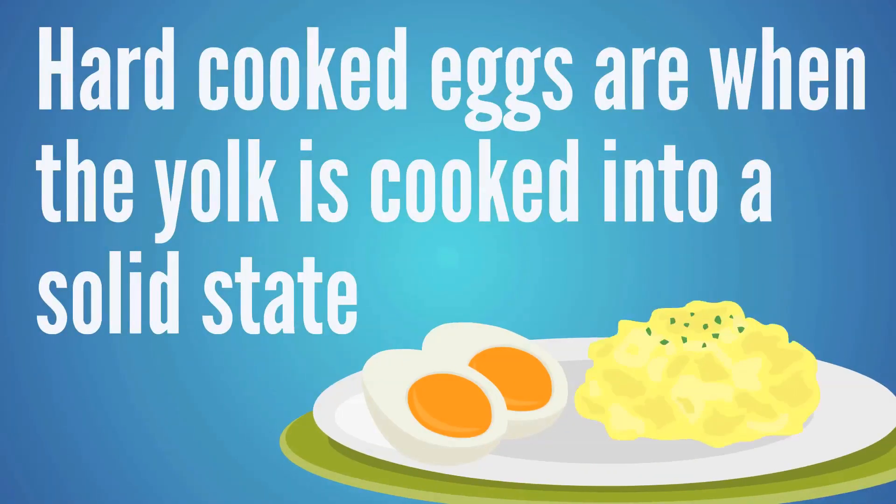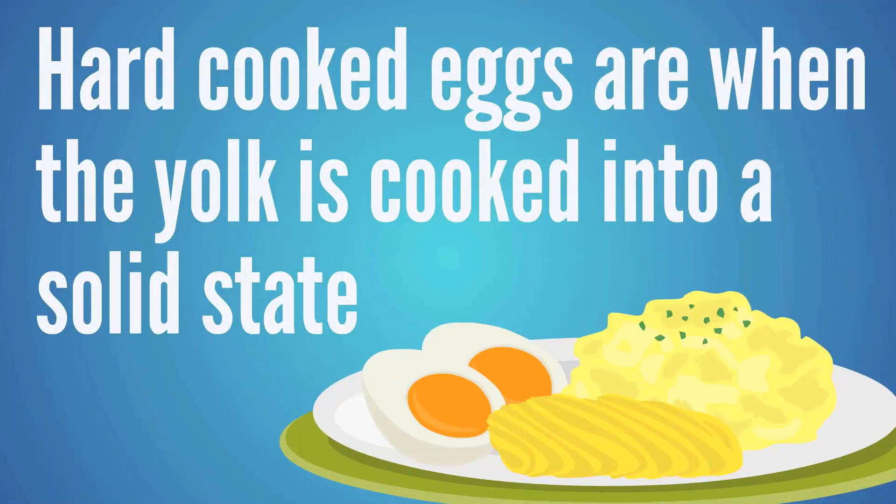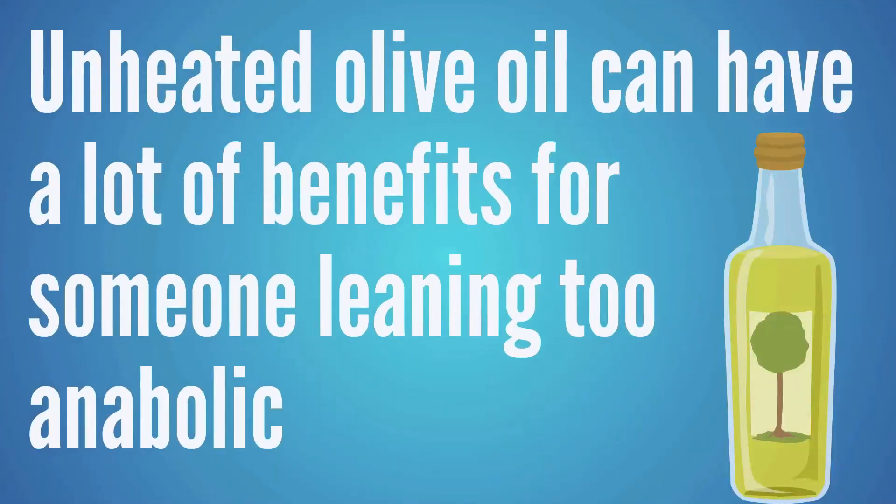There are also food choices that can help you improve an anabolic imbalance. For most people, it appears that hard-cooked eggs can help push a person less anabolic. Hard-cooked eggs would be like a hard-boiled egg, scrambled eggs, or omelet-style eggs where that yolk is cooked to a solid state. Another great food option is extra virgin olive oil in an unheated state. We really don't want to see people cook with olive oil because it can make those fats toxic when heated too much. You can cook your food and then add olive oil to it afterwards, and unheated olive oil can have a lot of benefits for someone leaning too far on that anabolic side.